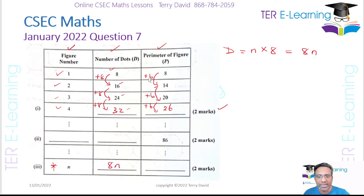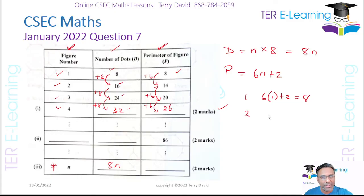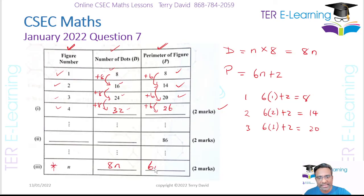If you look at the perimeter now, you keep increasing by 6. So let's find a relationship between figure number and perimeter. Since you're increasing by a constant amount, the equation is expected to have a 6 in it. If I use 6N plus 2: for figure 1, that's 6 times 1 plus 2 equals 8 — true. For figure 2, 6 times 2 plus 2 equals 14 — works. For figure 3, 6 times 3 plus 2 equals 20 — works. So the perimeter formula is 6N plus 2.